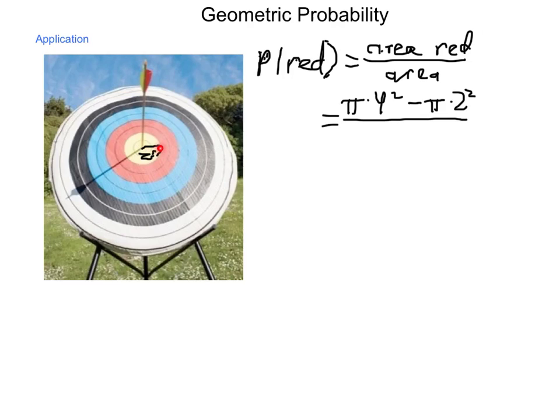We have 2, 4, 6, 8, 10 inches total. So we have pi times 10 squared. Now, calculating this out, 4 squared is 16, so I have 16 pi minus pi times 2 squared would be 4 pi divided by 100 pi.